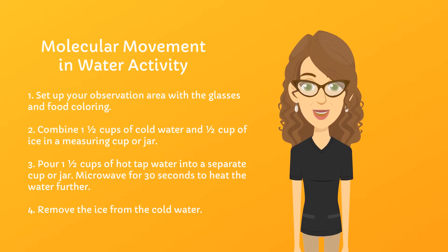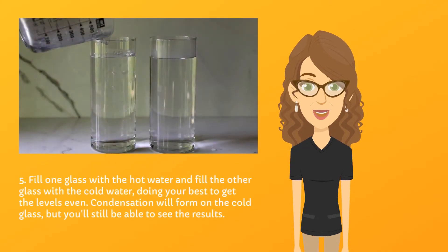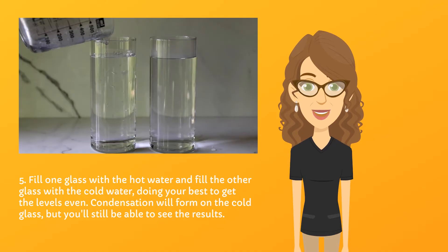Set up your observation area with the glasses and food coloring. Combine one and a half cups of cold water and one half cup of ice in a measuring cup or jar. Pour one and a half cups of hot tap water into a separate cup or jar and microwave for 30 seconds to heat the water further. Next, remove all the ice from the cold water. Fill one glass with the hot water and the other with the cold water, doing your best to get the levels about even. Condensation will form on the cold glass but you'll still be able to see the results.